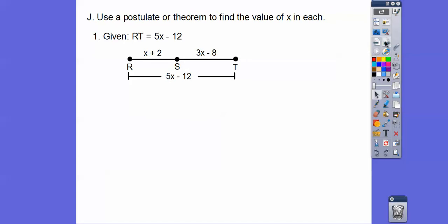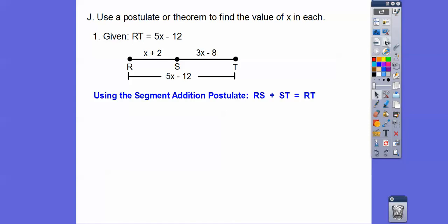Use postulates or theorems to find the value of x. Here we have a segment with S in between R and T — not necessarily the midpoint, just in between. It tells us RT equals 5x minus 12. Using the segment addition postulate — piece plus piece equals the whole — RS plus ST equals RT. We plug in, combine like terms, and solve for x, getting x equals 6.